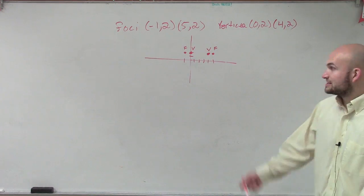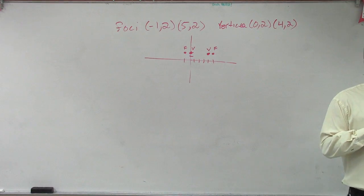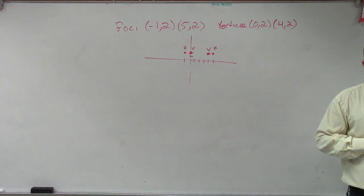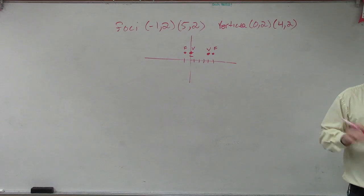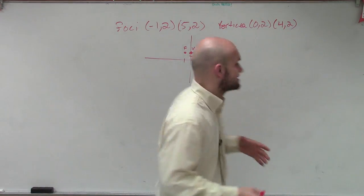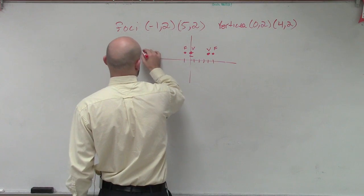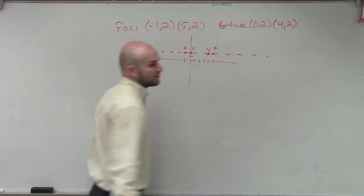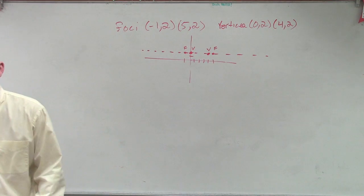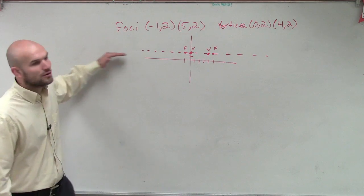Now, ladies and gentlemen, is this going to produce a hyperbola that's going to have a transverse axis horizontal or vertical? I'm guessing it's vertical. Wrong. Remember, your foci and your vertices are all going to lie on the transverse axis. So therefore, they're all going to lie on this axis right here. So, are we going to have a transverse axis that's going to be horizontal or vertical? Horizontal. Horizontal.